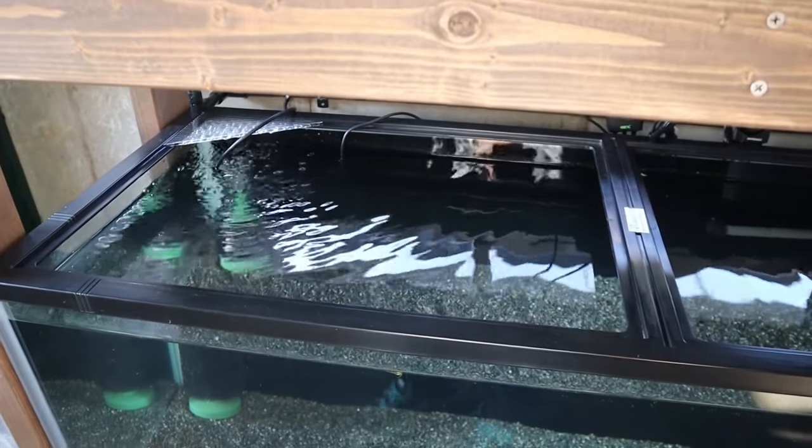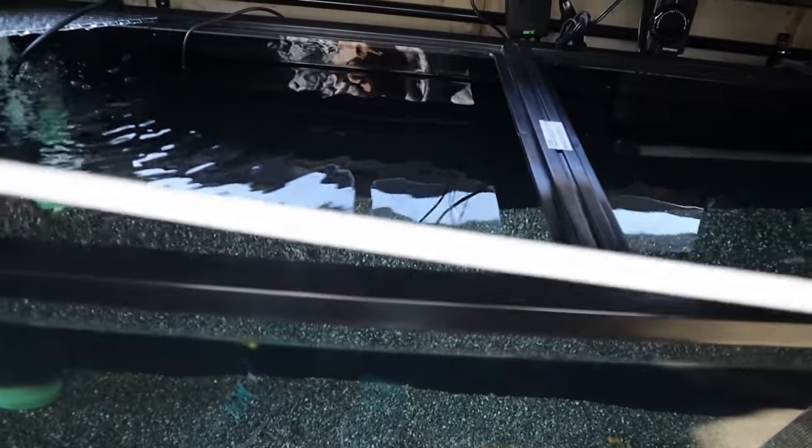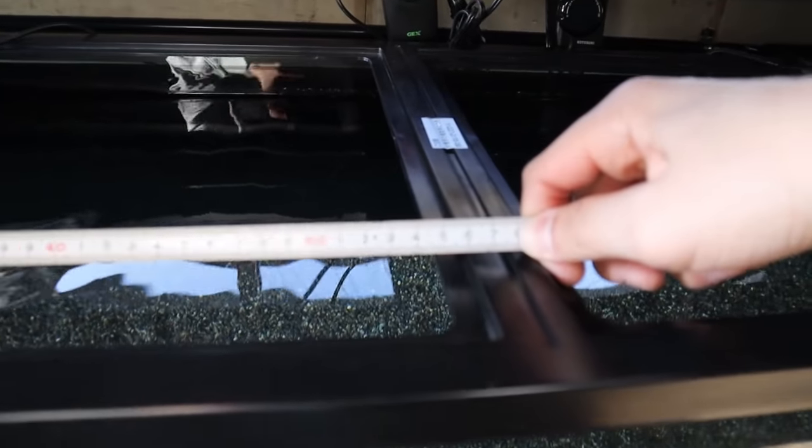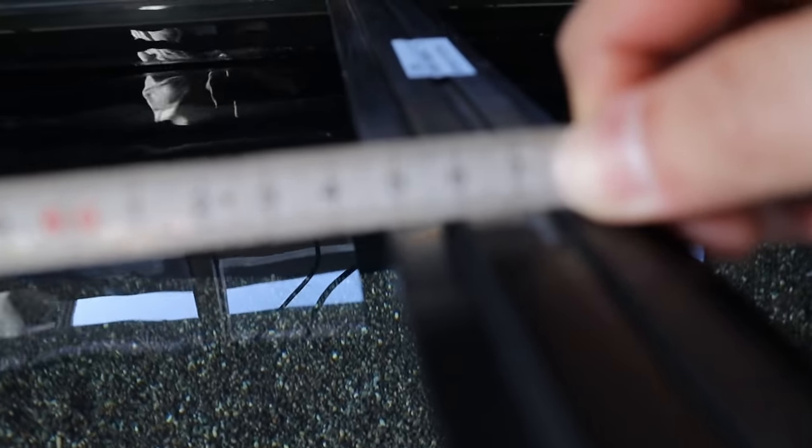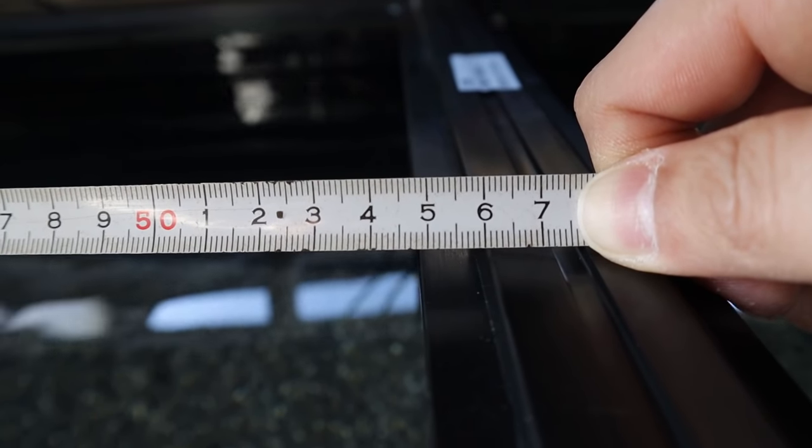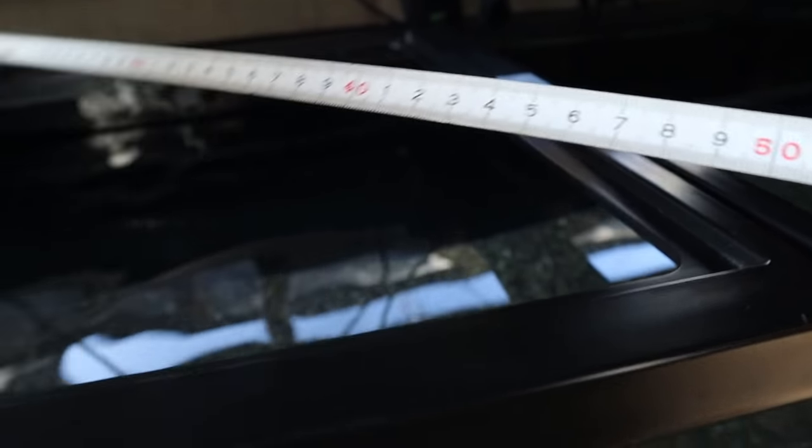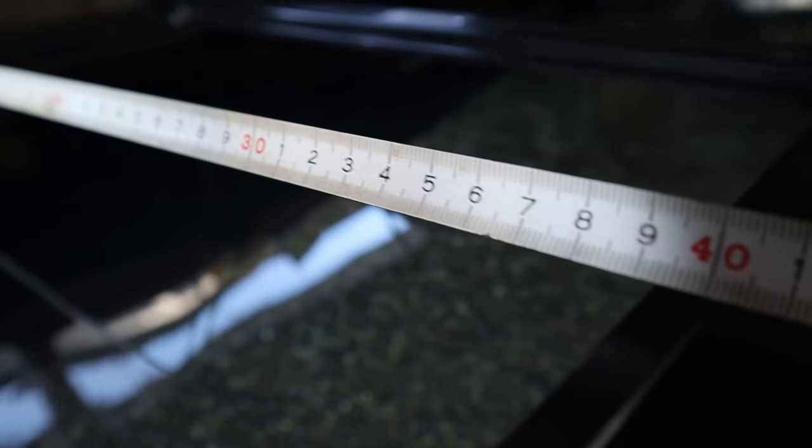So the first step is to measure the size you want your lid to be. I just use my tape measure and measure out the length and the depth. The length of this in centimeters is around 55.5. I can go to 56 but 56 will be a bit too tight, so I like to stick to 55.5.